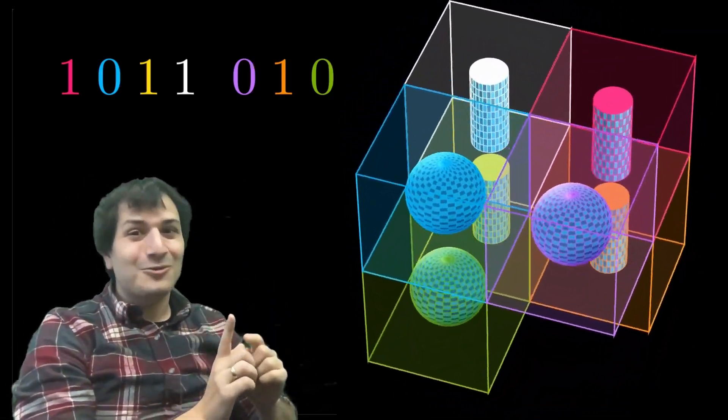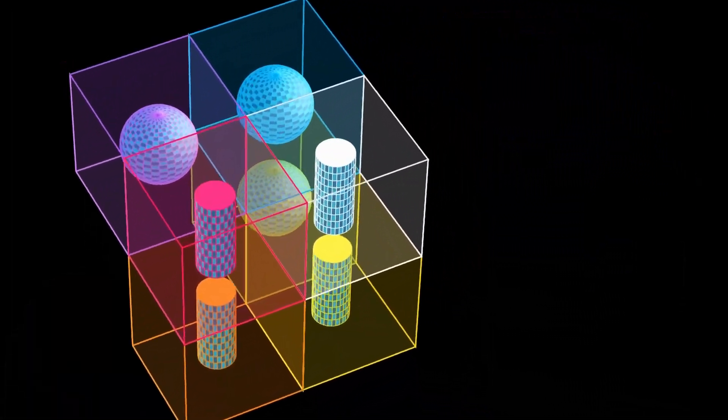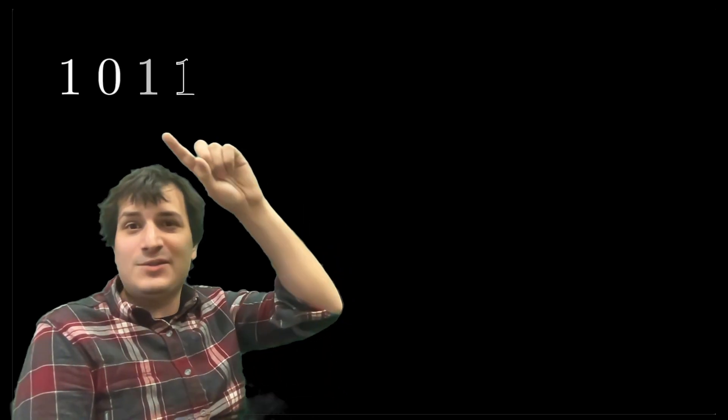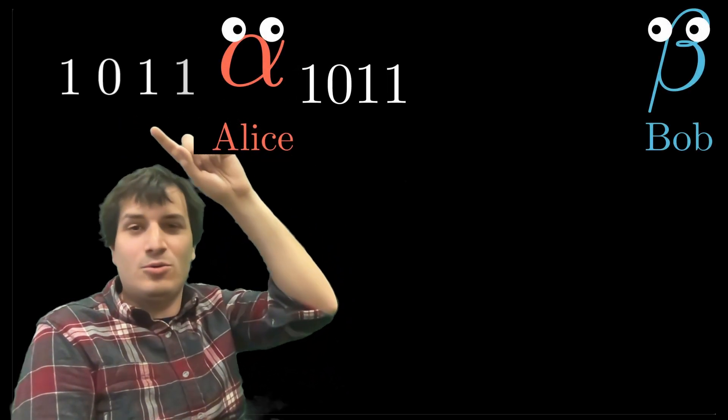In this video, I'm going to do a deep dive on my favorite error correcting code and show you how it works. So how does this code work? Let's pretend that Alice is sending a message to Bob and Alice wants to send the message 1011.